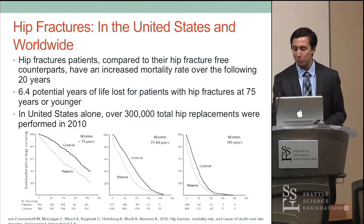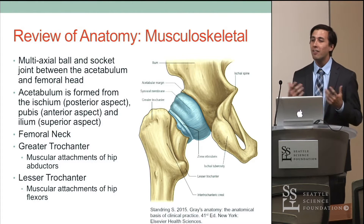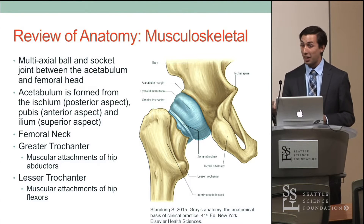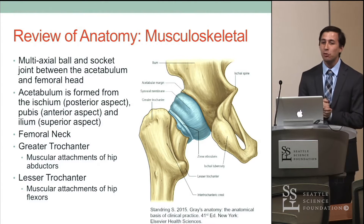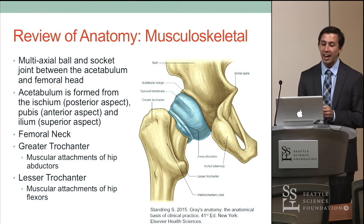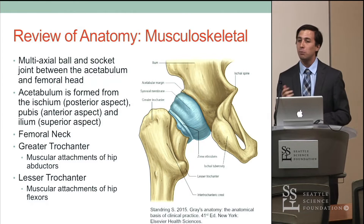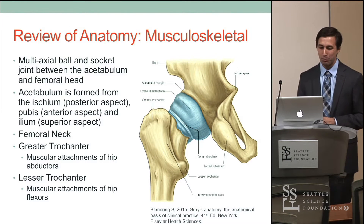Starting with the hip joint: a multi-axial ball and socket joint between the acetabulum and the femoral head. The acetabulum has three bones contributing to it — the ischium in the posterior area, the pubis anteriorly, and the ilium superiorly. Inferiorly, there's a notch traversed by the transverse acetabular ligament, finishing off that full circle.